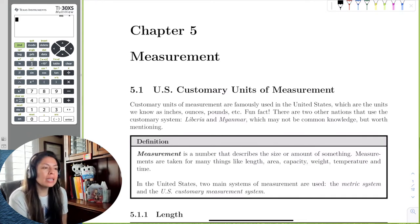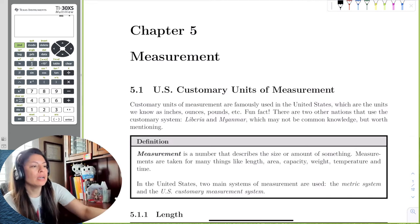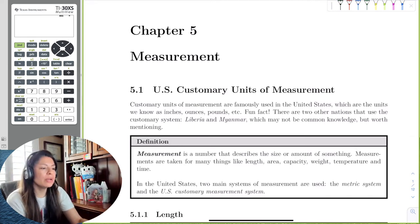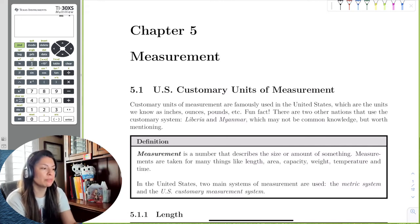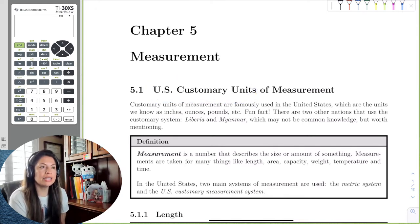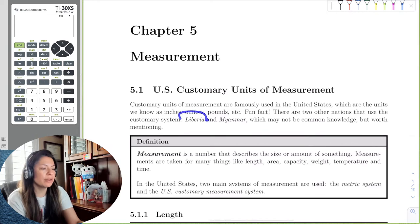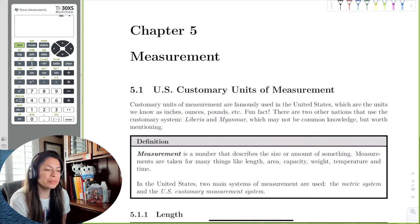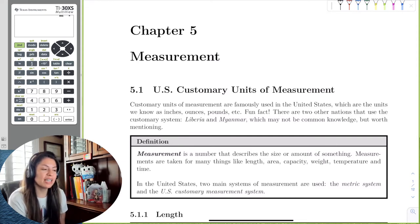To begin, in section 5.1, the U.S. units that we use — like inches, feet, ounces, pounds — are called the U.S. customary units. And even though we call it the U.S. customary units, a fun fact is that there are a couple of other nations that also use this system, which is Liberia and Myanmar. That may not be common knowledge because the U.S. is so large, but these countries also use it.